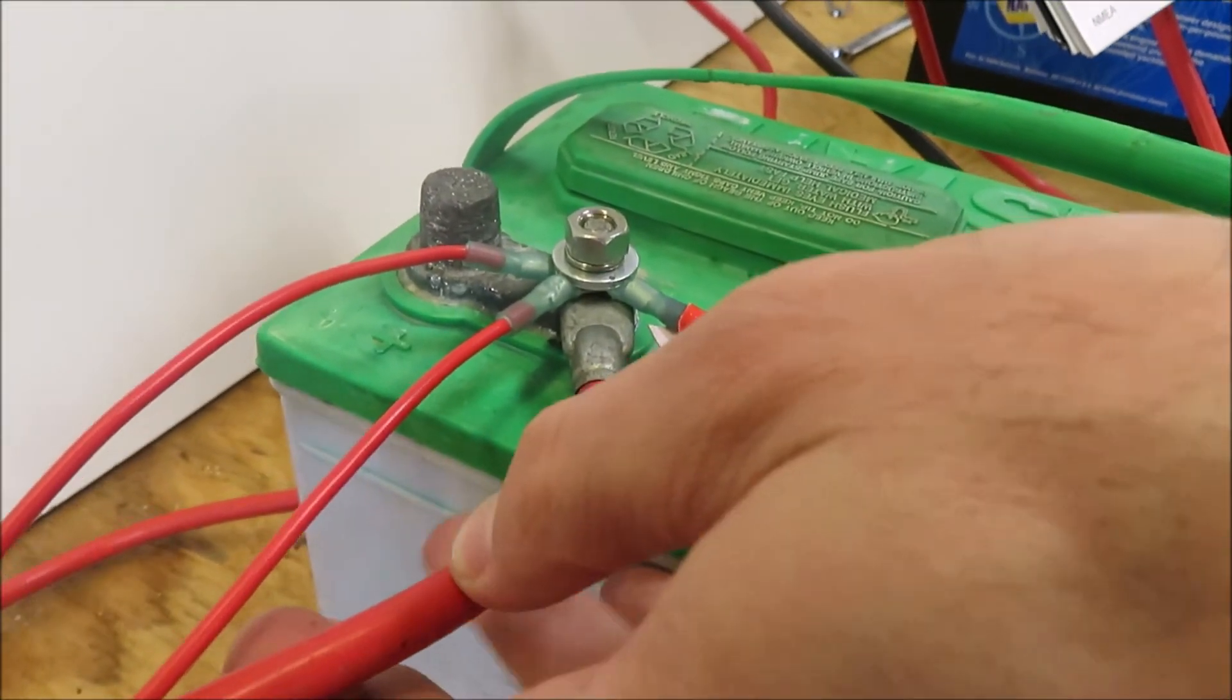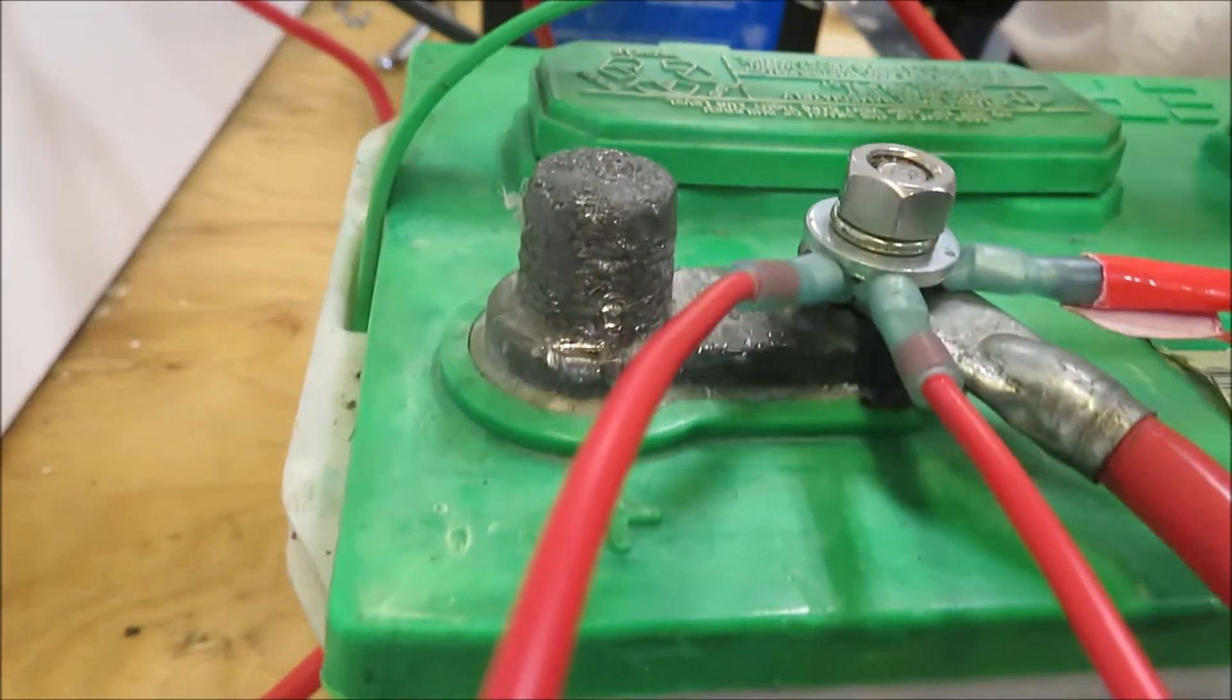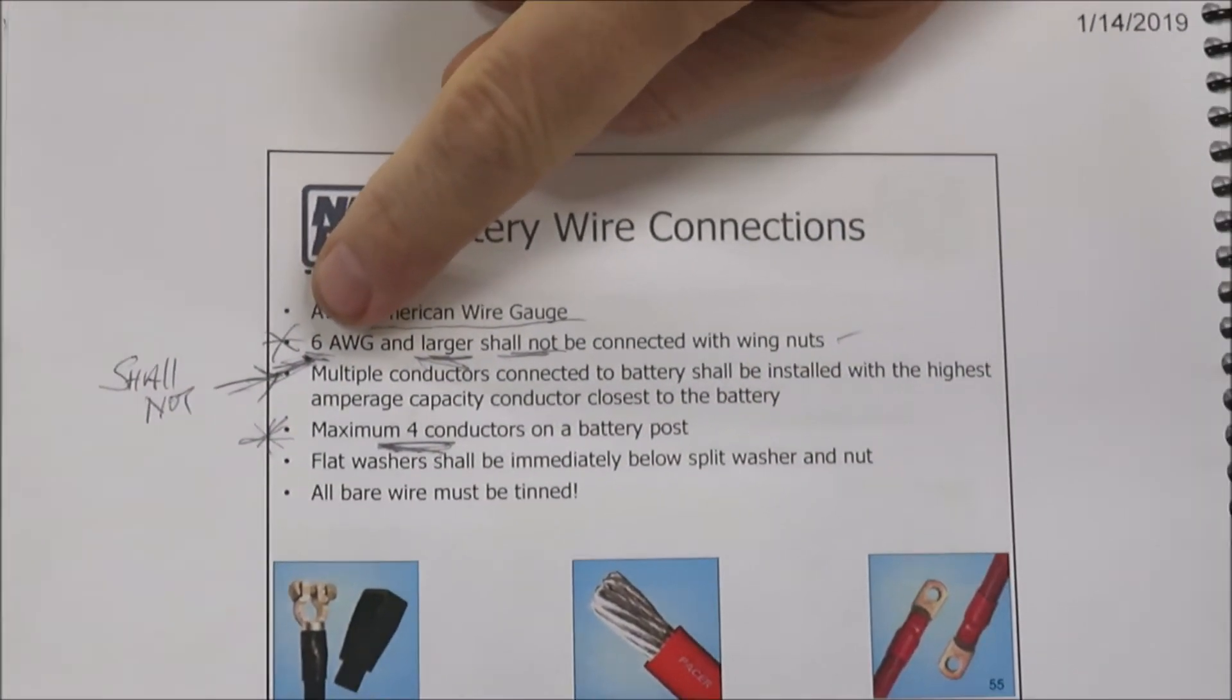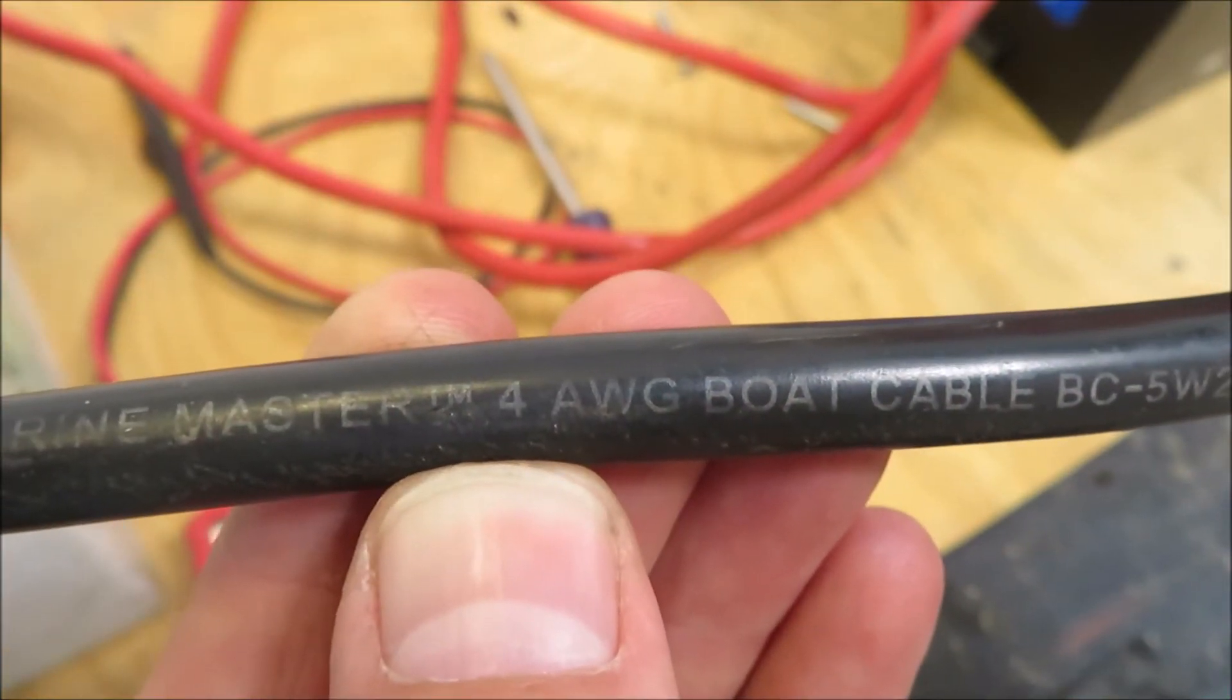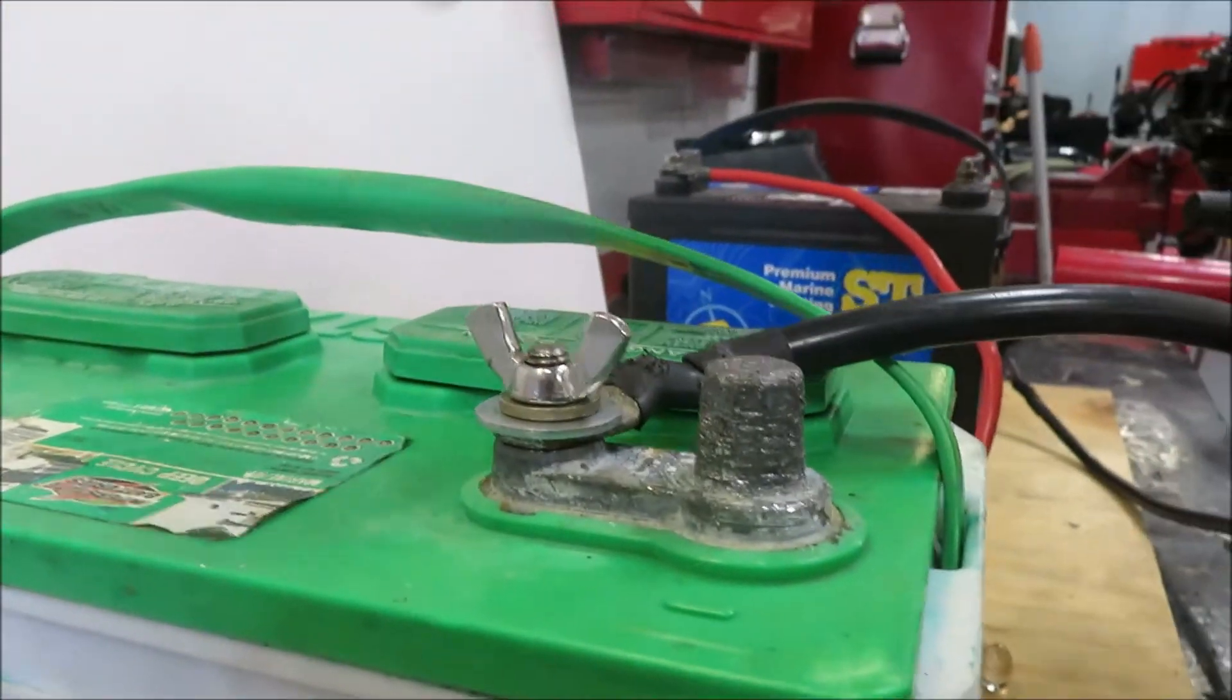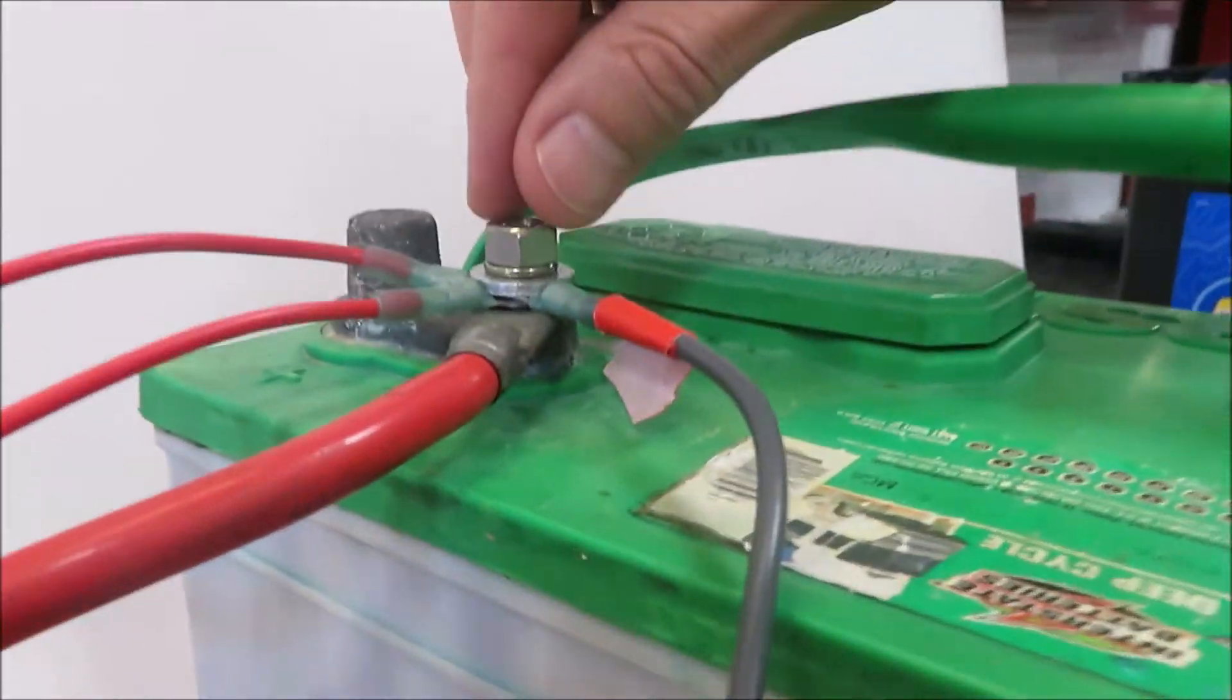So here we've got an example. You always want to put the thickest wire or the lowest gauge wire on the bottom, followed by your additional connectors attached to the battery post. And again, no more than four per post. One more thing to consider is when you're talking about number six American wire gauge and larger, shall not be connected with wing nuts. So this is number four American wire gauge or four gauge wire. And this would be an incorrect setup because this is smaller than a six gauge wire, so you shouldn't be using a wing nut on here. You should be using a regular nut.